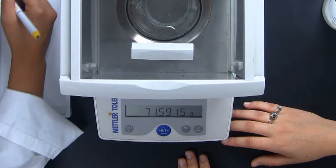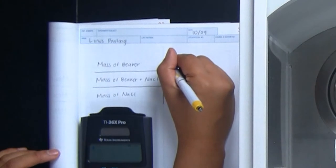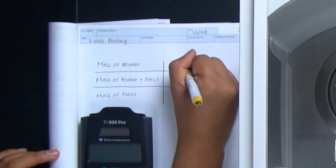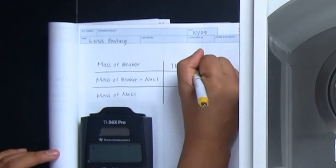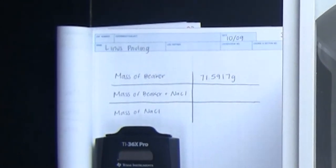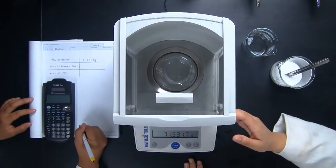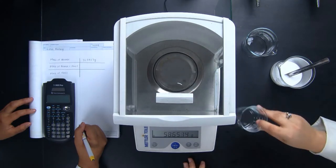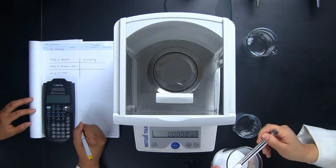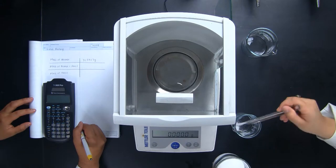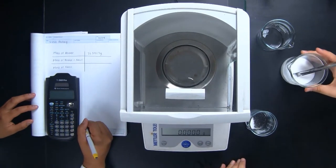Wendy has set up the data table to account for the mass of the empty beaker. Ileana carefully opens the balance box, places the beaker inside, and then closes it. This keeps any air movement through the lab from altering the measurement of the balance.